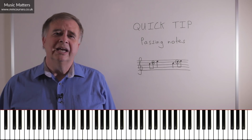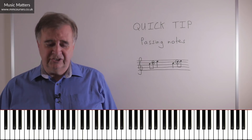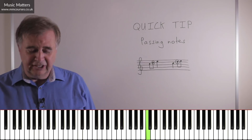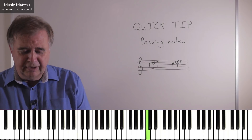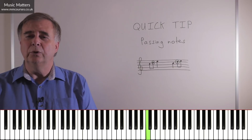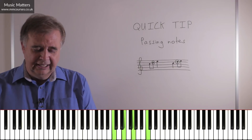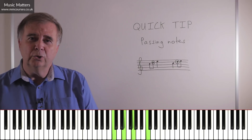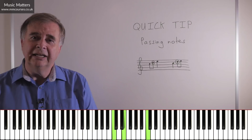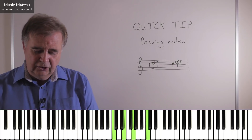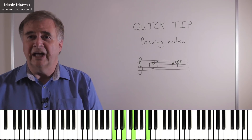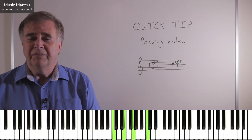So in other words, say I've got a C in the melody and I'm in the key of C major, well I might have a chord of C major to go with it. So if I put down a chord of C major, which is C, E and G, you can hear that C fits nicely with that chord.